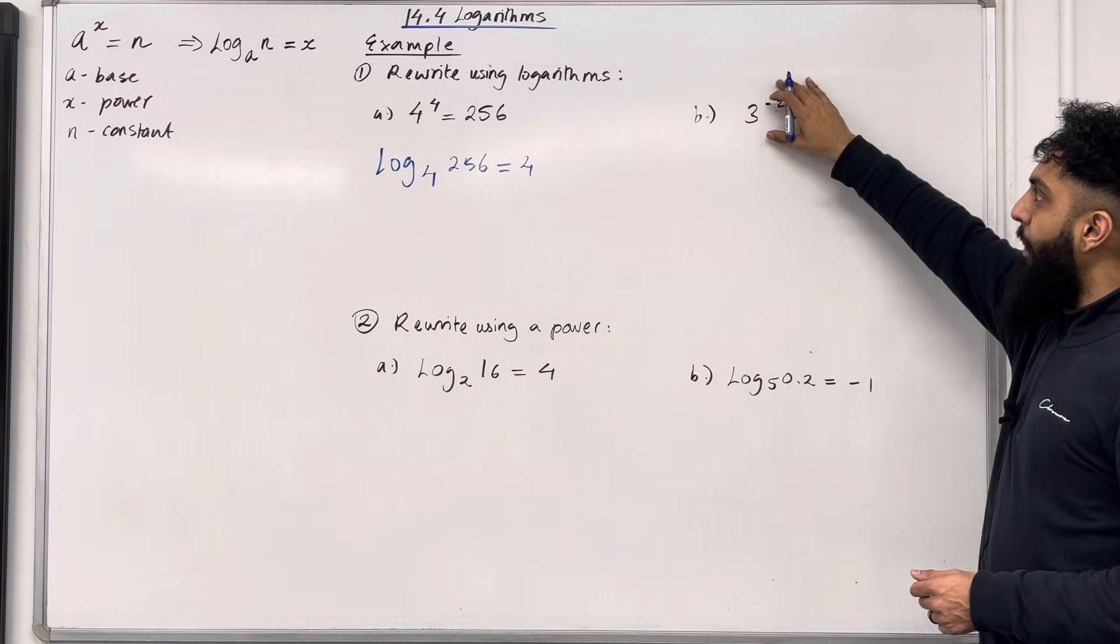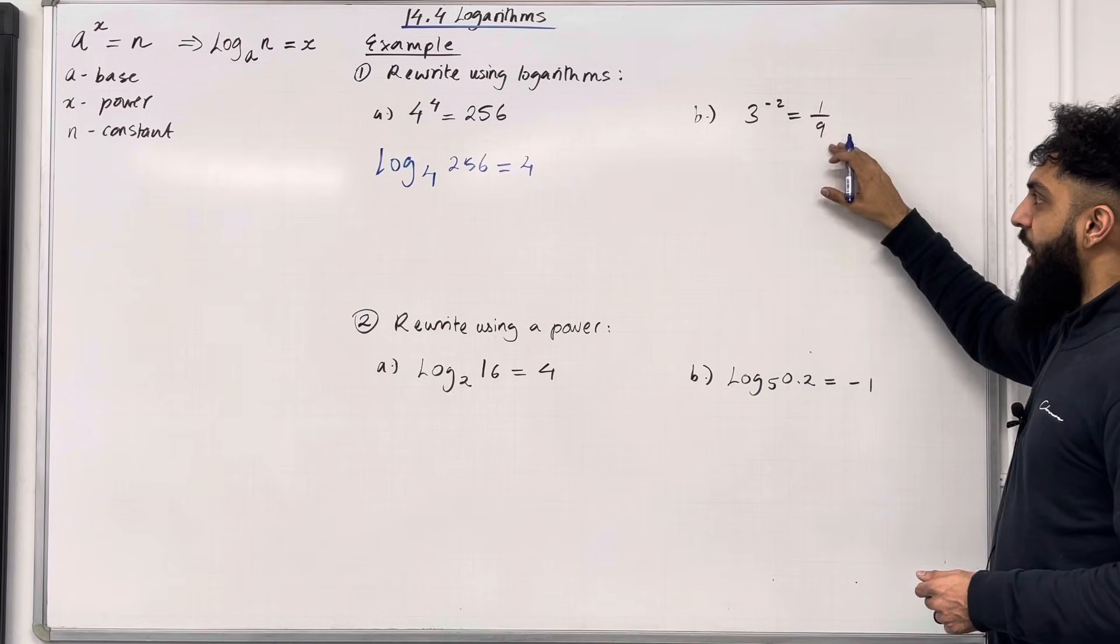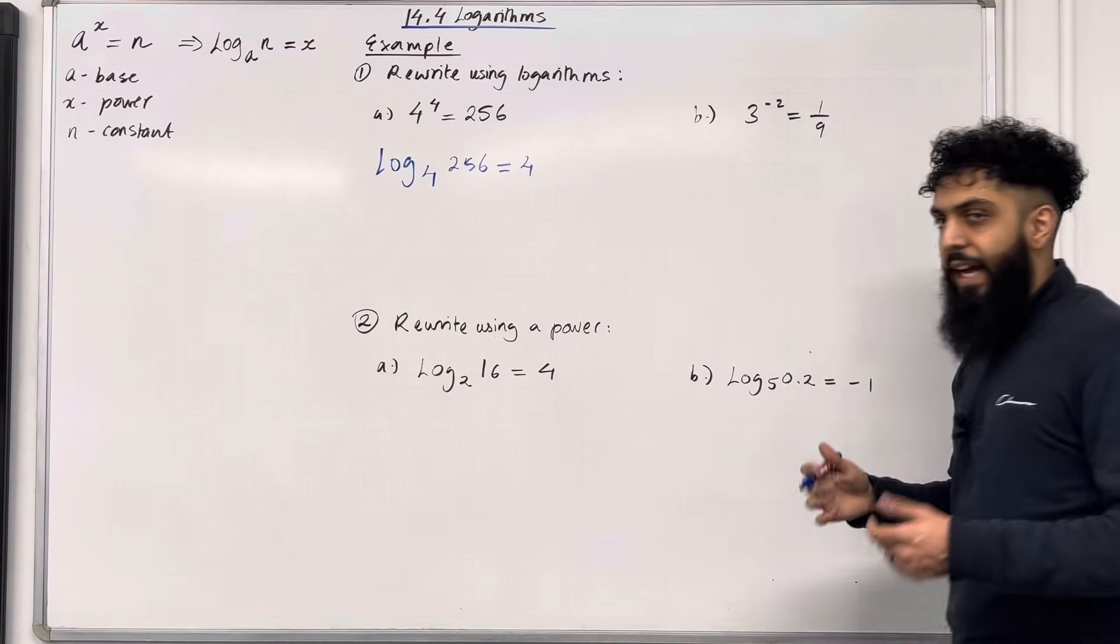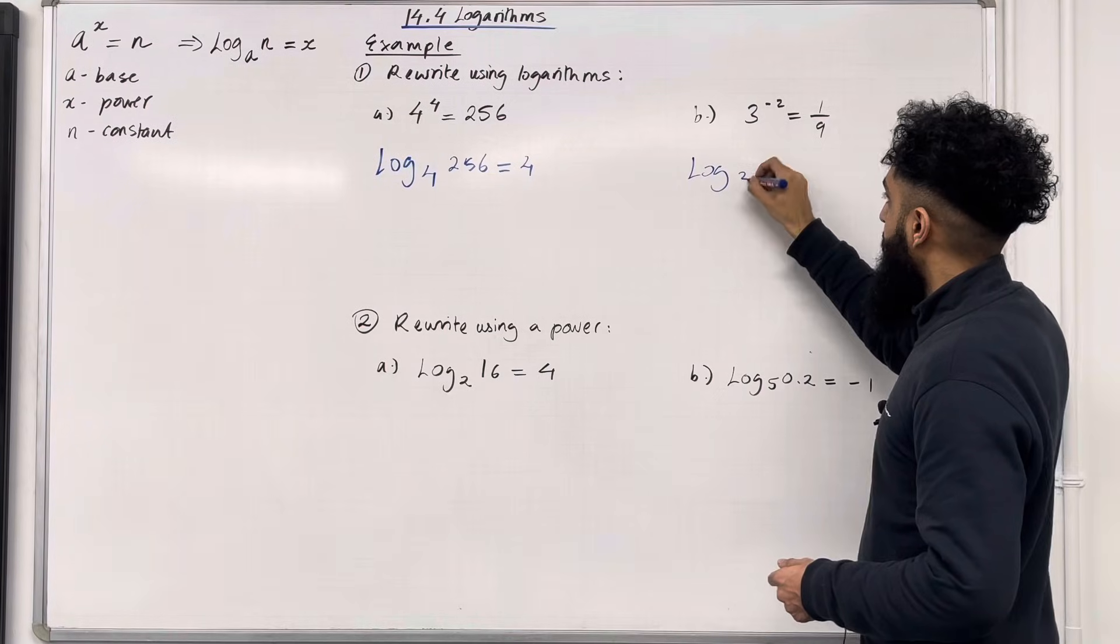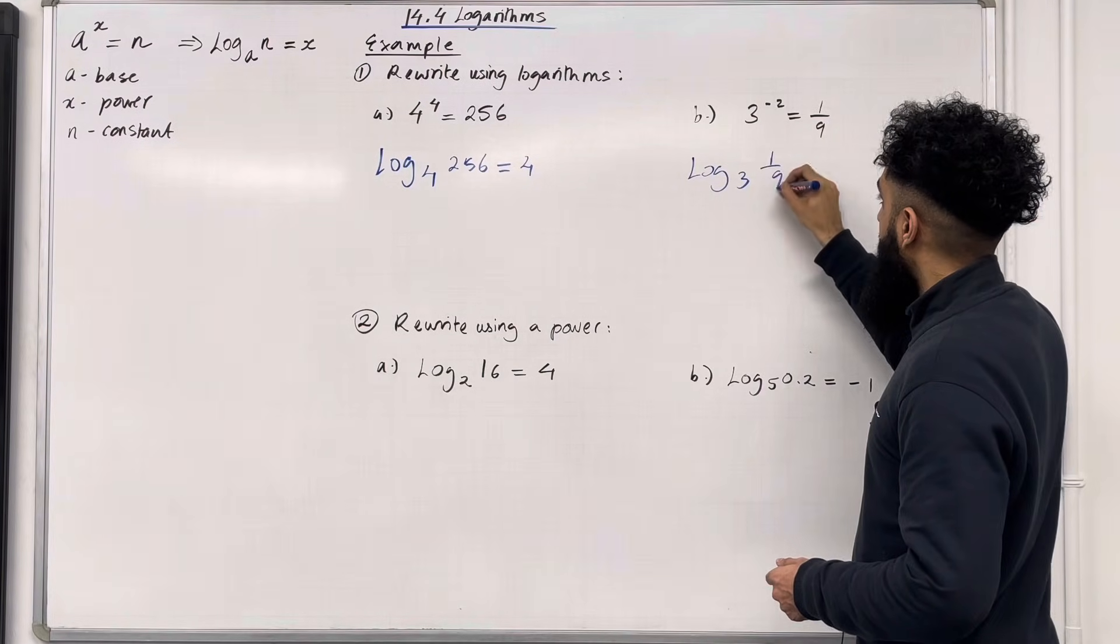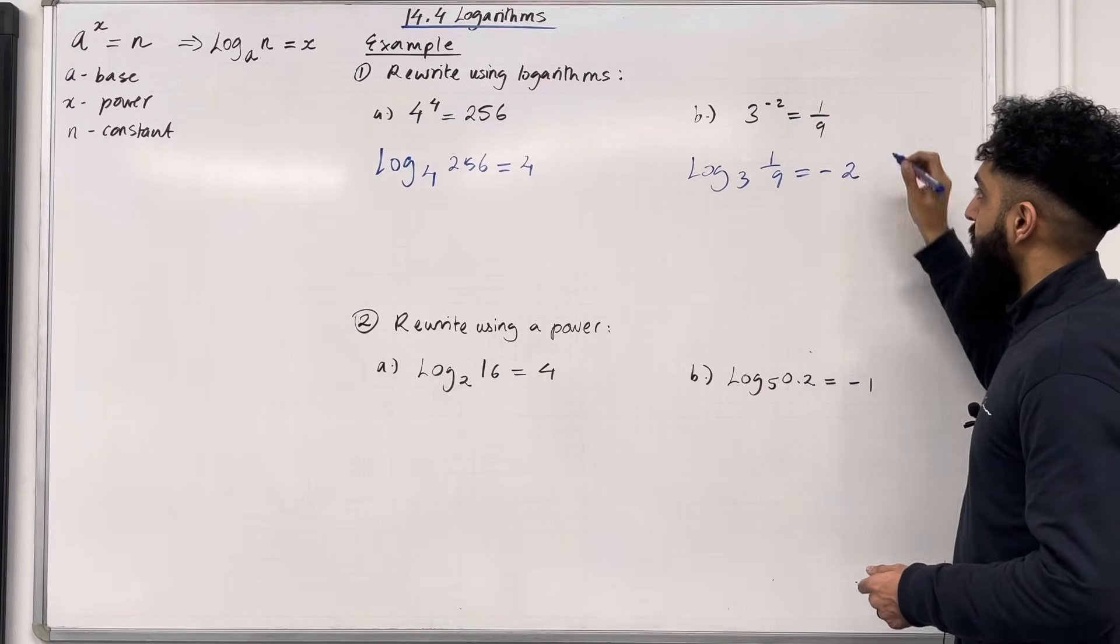Part B, 3 to the power minus 2 is equal 1 over 9. So in this scenario, we have log to the base 3 of 1 over 9 is equal to the power minus 2.